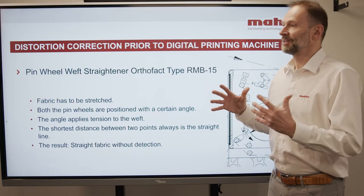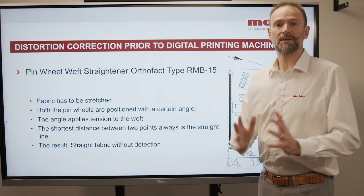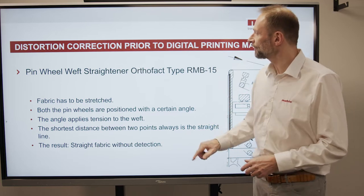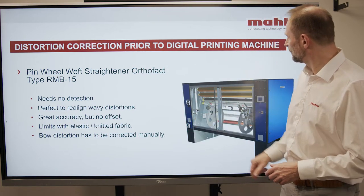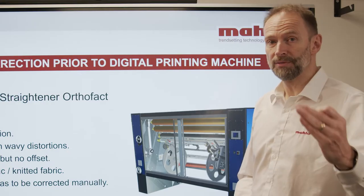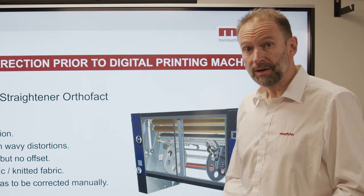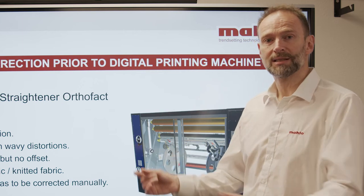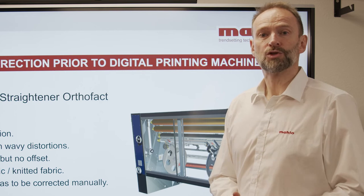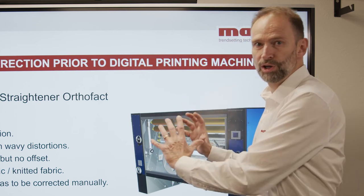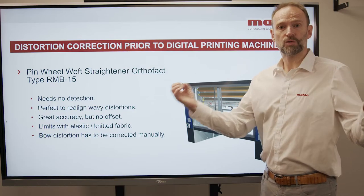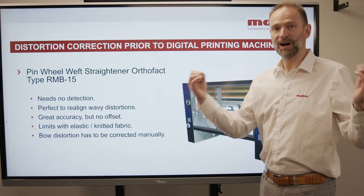This machine will make sure that you always have a straight fabric before you go to the printing machine. It doesn't need any detection. It is really perfect to realign also wavy distortions — S-distortions, dog legs. This is the solution. No other weft straightener will be able to solve that problem except the pinwheel, because it will always stretch even the waves and dog legs out of the fabric.